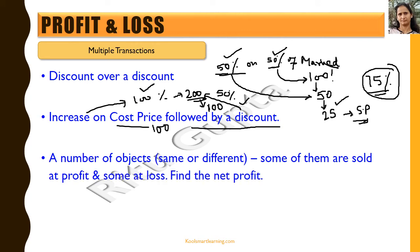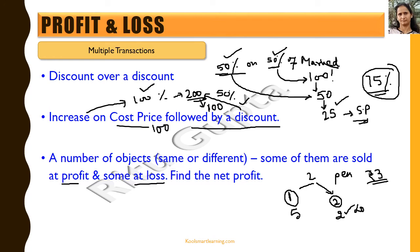Sometimes we have multiple objects. Suppose I have two pens both purchased at 3 rupees each. One pen is sold at 5 rupees (profit) and the other is sold at 2 rupees (loss). To find the net profit or loss, we find the total cost price and the total selling price, then calculate the profit or loss on the net transaction. The net result could also be a loss.